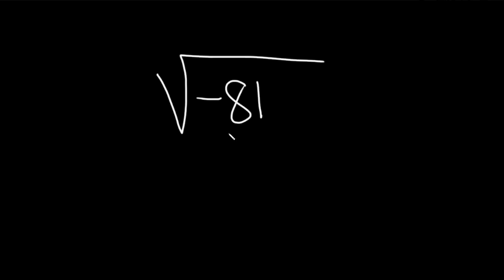The first step is whenever you see a negative inside a square root like this, you want to automatically turn it into an i. So this becomes i, and then here we have the square root of 81.